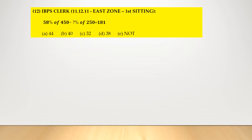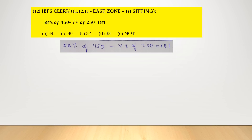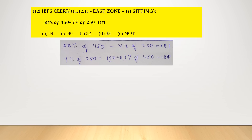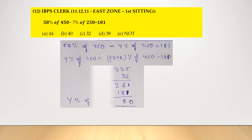Question: 58% of 450 minus y% of 250 is equal to 181. Taking y to one side, y% of 250 = 58% of 450 minus 181. 50% of 450 equals 225, and 8% of 450 equals 8 × 4.5 = 36. Therefore the summation is 261 minus 181 = 80.